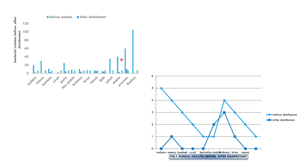This is the graph of the isolates. The light blue color indicates before the application of the disinfectant, and the dark blue color indicates after the application of the disinfectant. As you can see, after the application of the disinfectant, the number of bacterial isolates is very much reduced. This is also the graph of fungal isolates — the light blue line indicates the high number of fungal isolates before the application of the disinfectant.